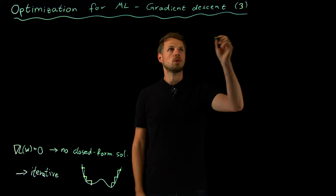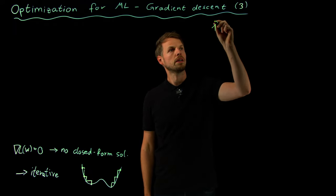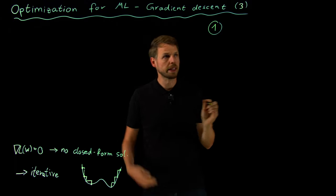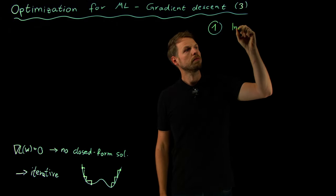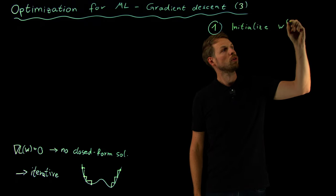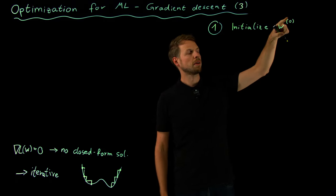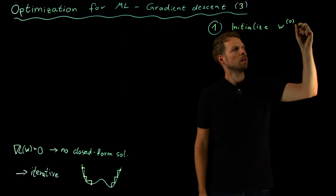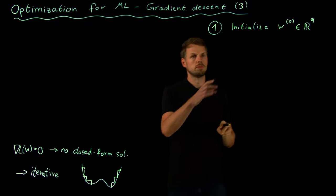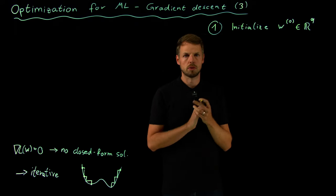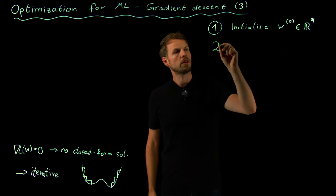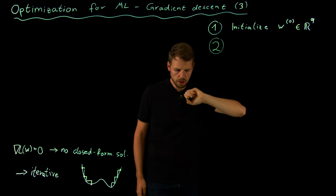This is an iterative process. First, we define an initial guess — we initialize our weight w, using an upper index in brackets for the iteration number. If we have q parameters, this is a q-dimensional vector w⁽⁰⁾ that we initialize somehow: maybe randomly, maybe all zeros, or with an educated guess depending on expertise.